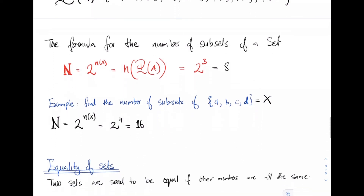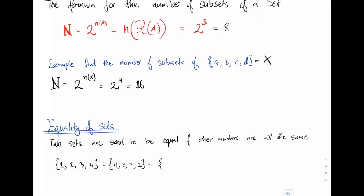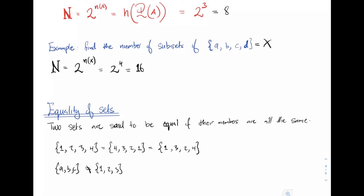Before we close, we want to talk about the equality of sets. We say that two sets are equal if their members are all the same. For example, {1, 2, 3, 4} is equal to {4, 3, 2, 1} — even if we switch around elements, as long as all members are accounted for, the two sets are equal. However, {a, b, c} and {1, 2, 3} are not equal.